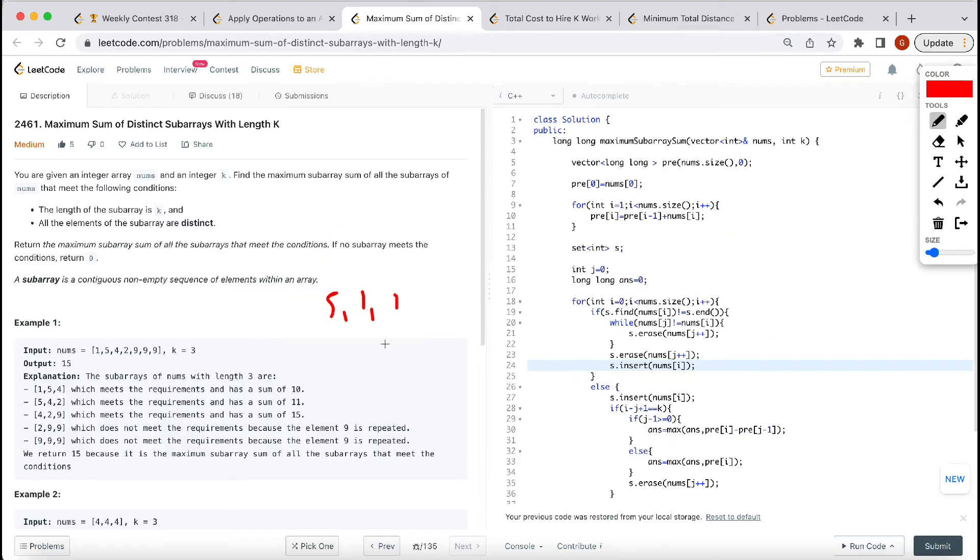So this is already in the set. We use a while loop until we get that repeated element. The element is repeated, so we go ahead. Before we go ahead, we remove that element, then we go ahead.